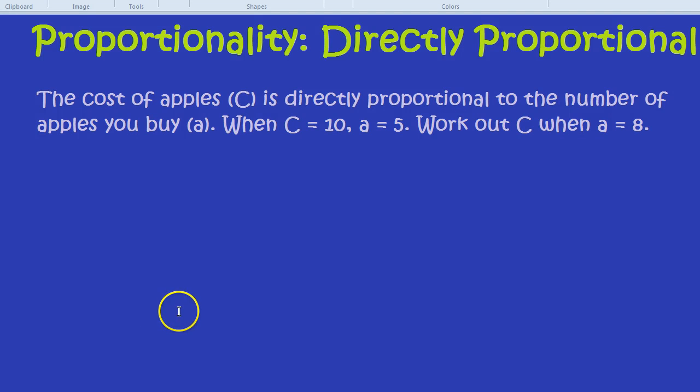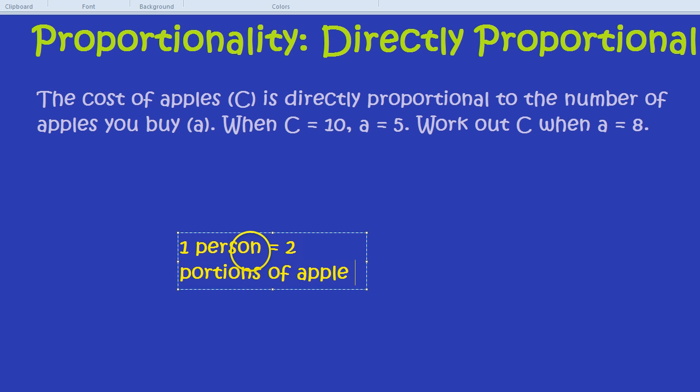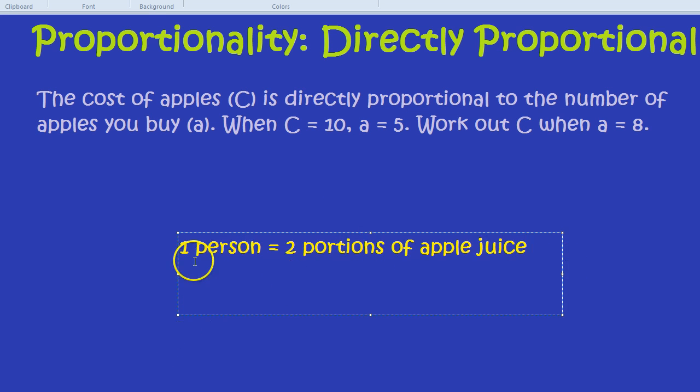Let's say you were going to have a party and every person who came would have about two portions of apple juice. So if one person came, you would need two portions of apple juice. What about if five people came? You would have ten portions of apple juice.